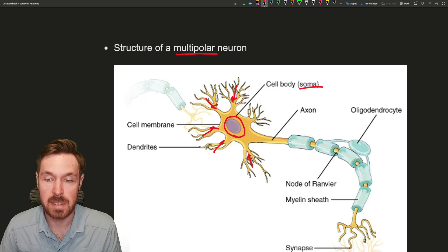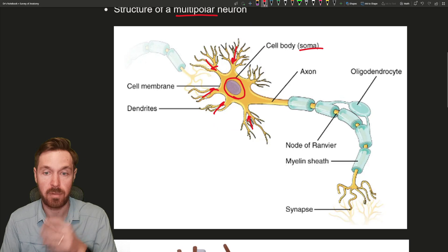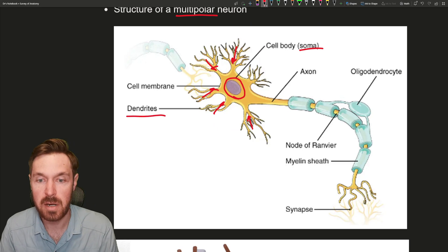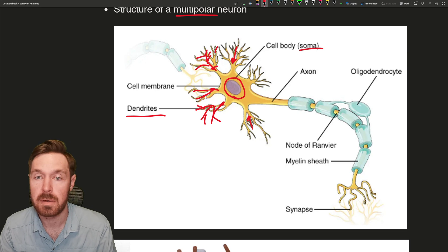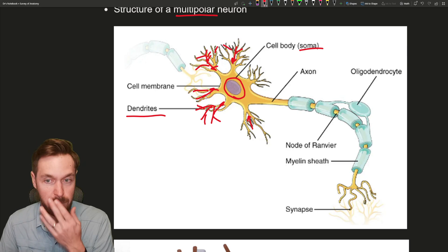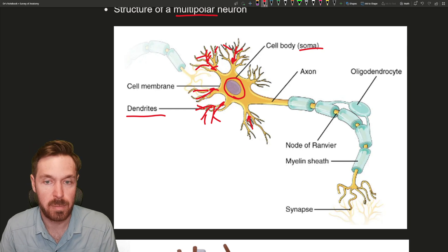This is where the nucleus is, also known as the soma. So this is the cell body of a neuron and it brings in all that information from the receptive endings called the dendrites. All these structures out here that could be branched are called the dendrites.